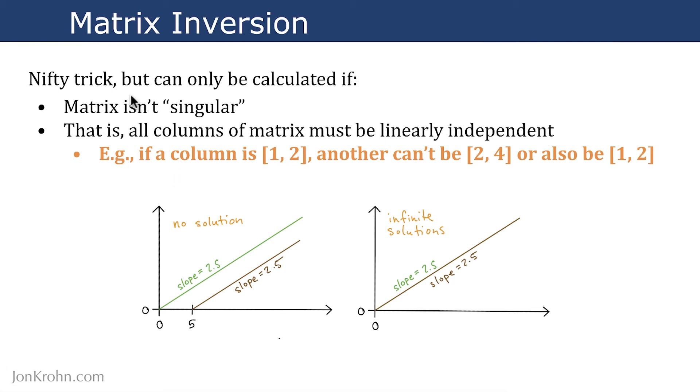So what this means is a matrix is singular and it can't be inverted if there are two columns that are dependent. So where you have a multiple, where one column, say two and four, is a multiple of another column, one and two, this would mean that you have two lines that never cross over each other. And so it's impossible to find a solution. And of course, if you have two columns with exactly the same value, so one and two and one and two for two different columns, then this means that you have overlapping lines and you have infinite solutions. So in that case as well, you can't use matrix inversion to solve.